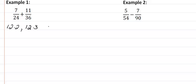So that means my LCD then is going to be 12 times 2 times 3, or in other words, 72. So I take 7 24ths, and I want to rewrite that as something over 72, plus our 11 36ths.